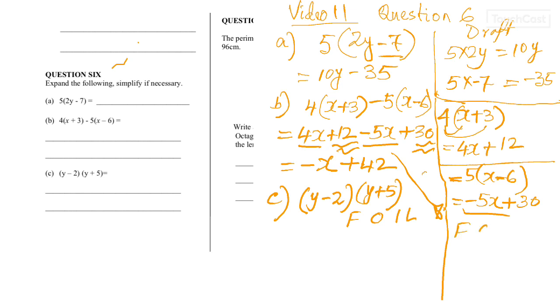FOIL means first, outside, inside, then the last. So, the first one is this two. Then outside, this two. Then inside is this two multiplication. And the last one is, of course, those two.